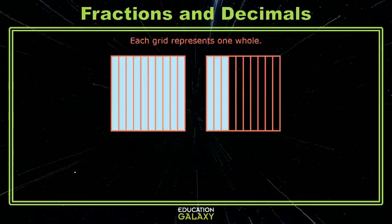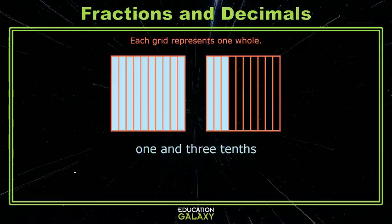So what happens when we have a value greater than one? Here we have two grids that each represent one. If we talk about the shaded parts, we have a whole one and then three-tenths of the other. So we can write that as a mixed number, and we can also write that as a decimal, with a one in the ones place and a three in the tenths place.